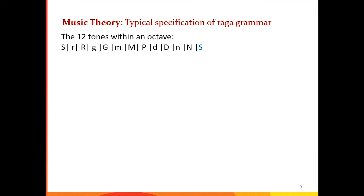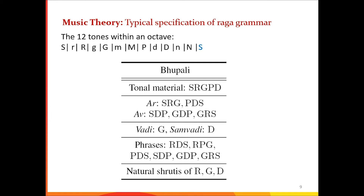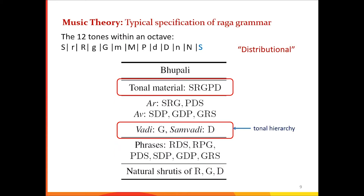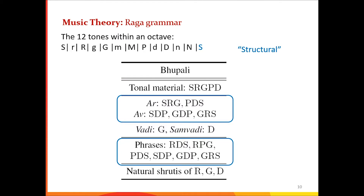If we look at Raga Bhupali, this is a typical kind of grammar presented in a book. It will tell you what notes are allowed in Bhupali, what are the typical phrases in Aroh and Avroh, that the two important notes are the vadi and sambadi, and these are some typical phrases — along with notes about natural shrutis of those notes, which may refer to just-intonation notes. These are what we call the tonal hierarchy — the important notes — the characteristics of the distribution, which notes occur and their importance. And the structural properties tell you what are the typical combinations that occur — like Gandhar-Shadaj is very common, and Pancham-Shadaj is common, and so on.